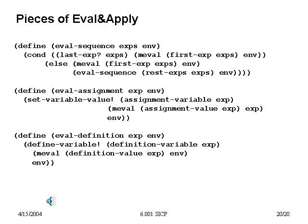So there's the whirlwind tour of eval and apply. We've certainly buried some details behind data structures, but the heart of eval is: given an expression and environment, in general it reduces the evaluation of that expression to the application of a procedure to a set of arguments. And apply takes that application and in general reduces it to the evaluation of a new expression — the body of the procedure — with respect to a new environment in which the parameters have been bound to the arguments passed in while inheriting things from the earlier environment. We have some special forms in between, but that's the general form of eval and apply.